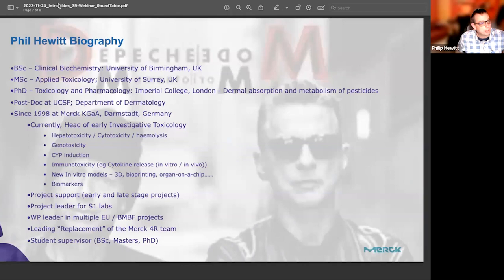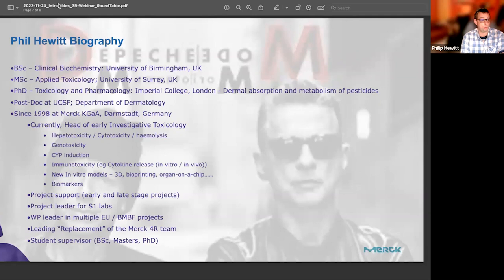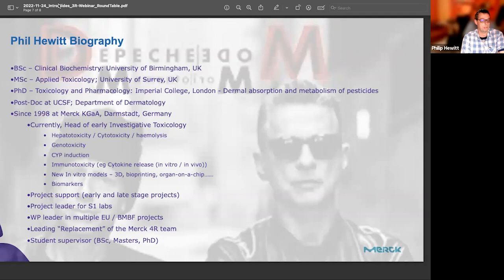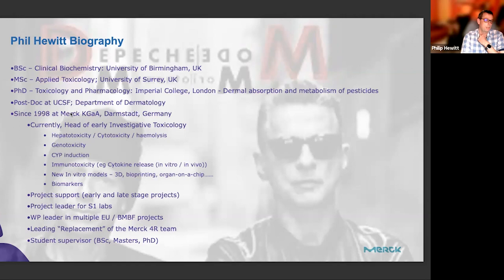Hi, I'm Phil Hewitt, based at Merck KGaA in Darmstadt, Germany — originally British and now German due to Brexit. I'm a biochemist by training with a master's in toxicology and a PhD in in vitro models from the early 1990s, followed by a short postdoc in San Francisco. I joined Merck in 1998 and have been in the in vitro tox lab more or less the whole time. Currently I head the early investigative tox group, which covers in vitro gene tox, CYP induction, immune tox, and a new small group focusing on advanced cell culture models.